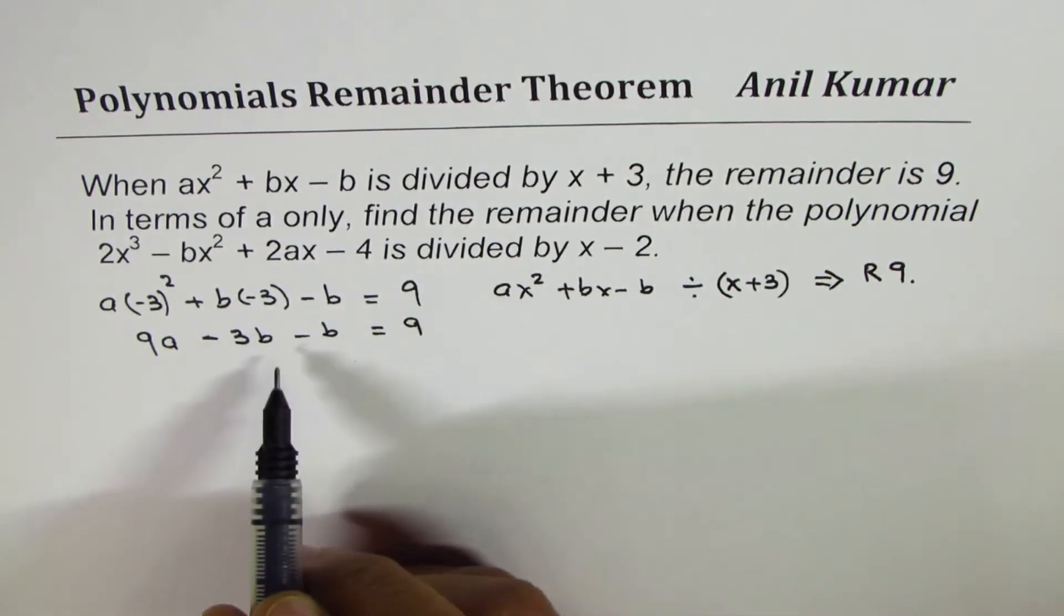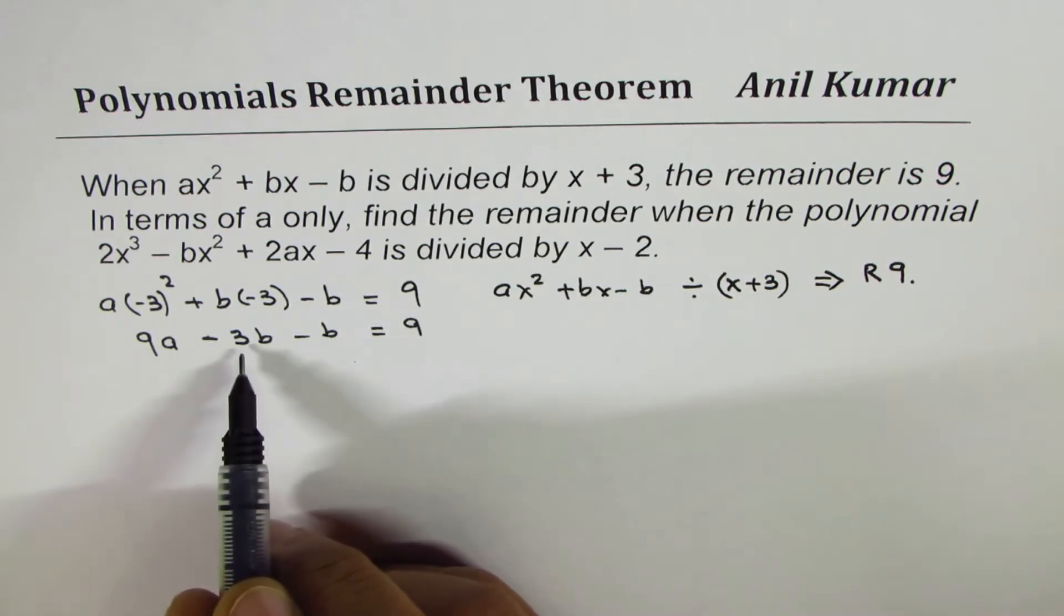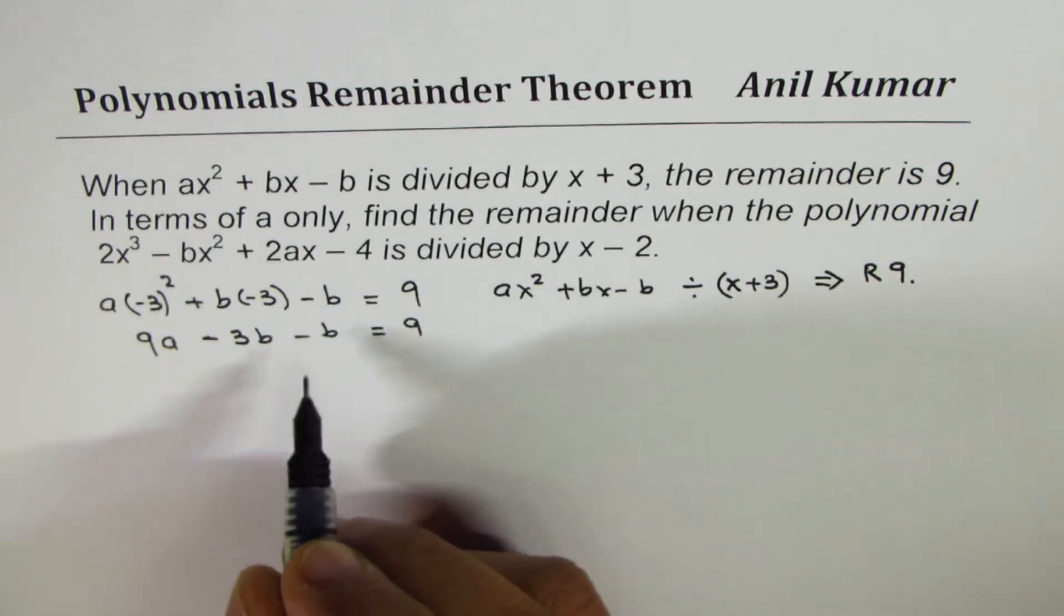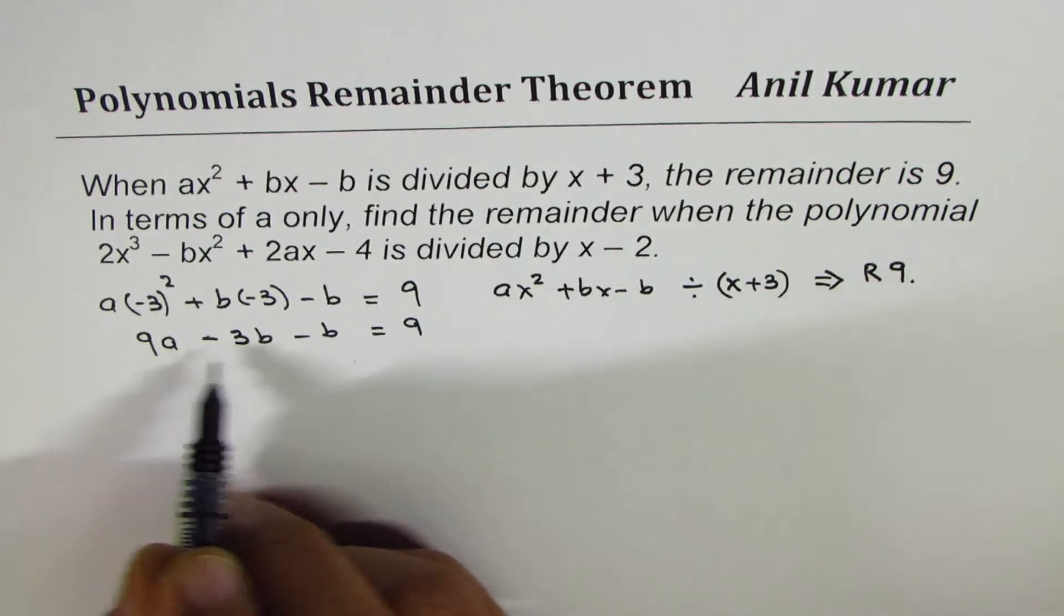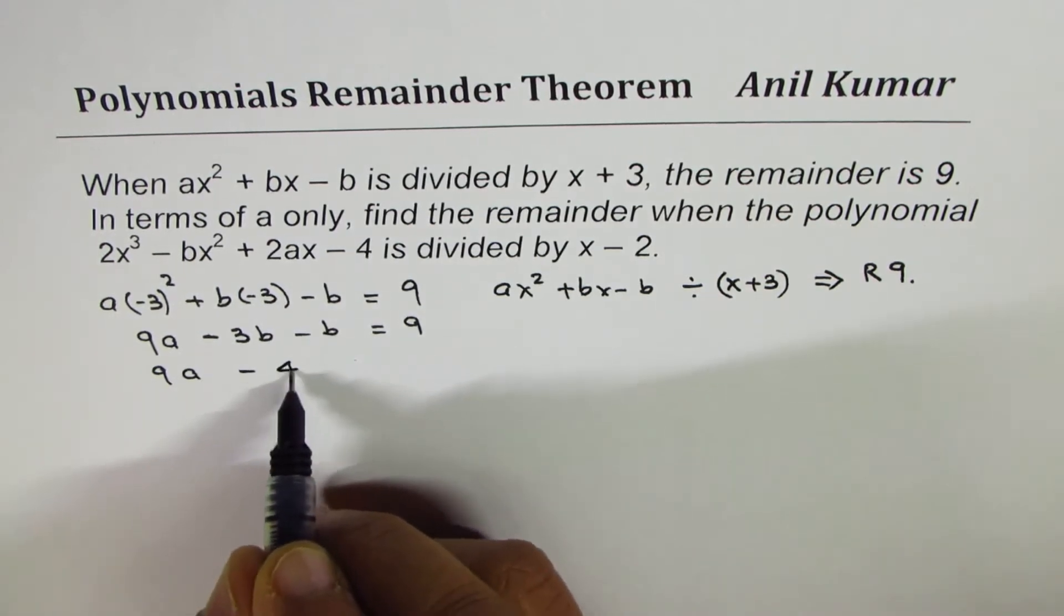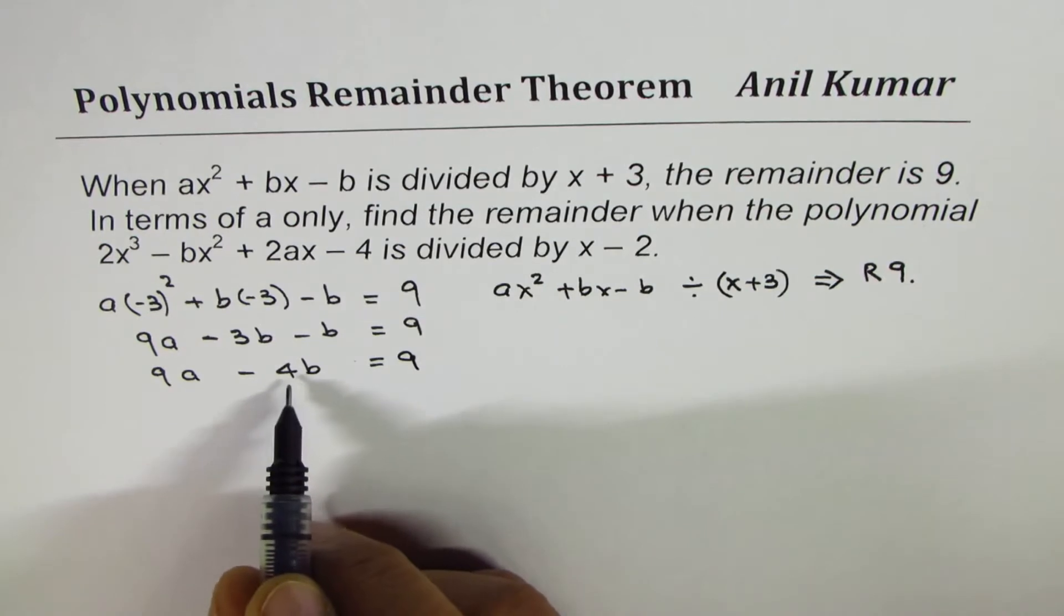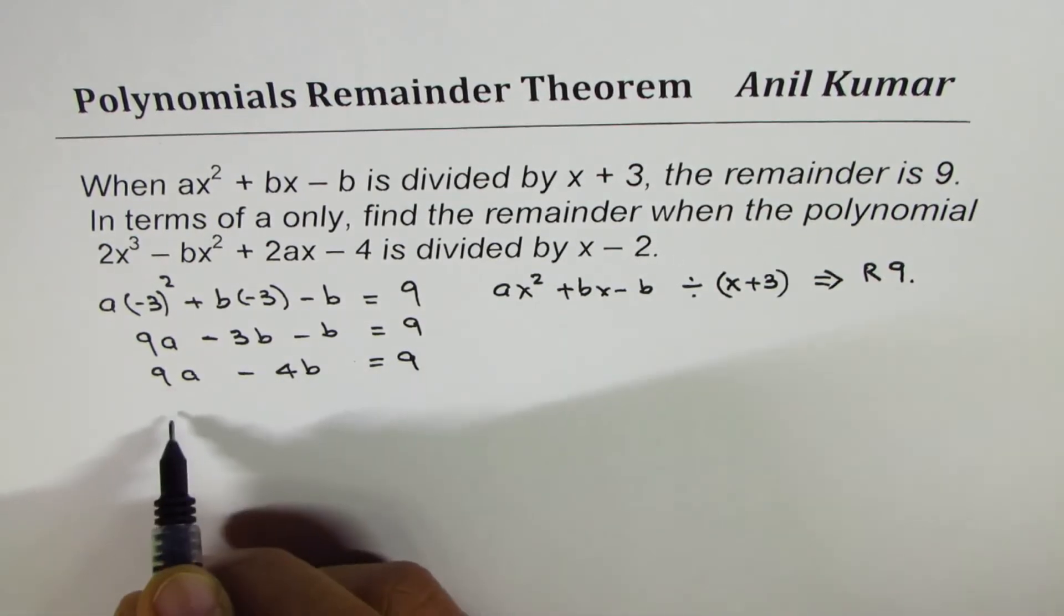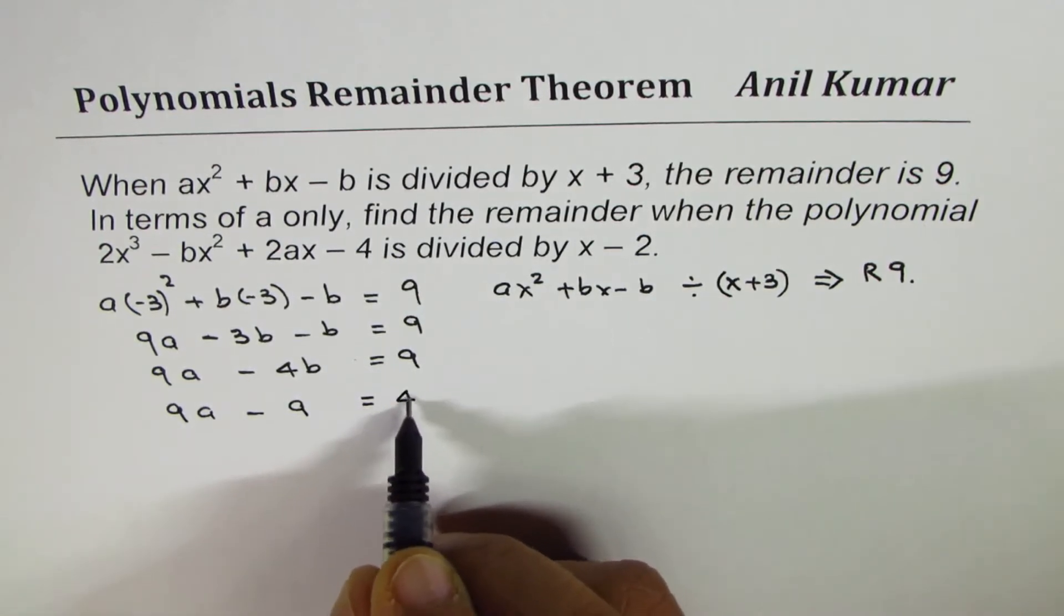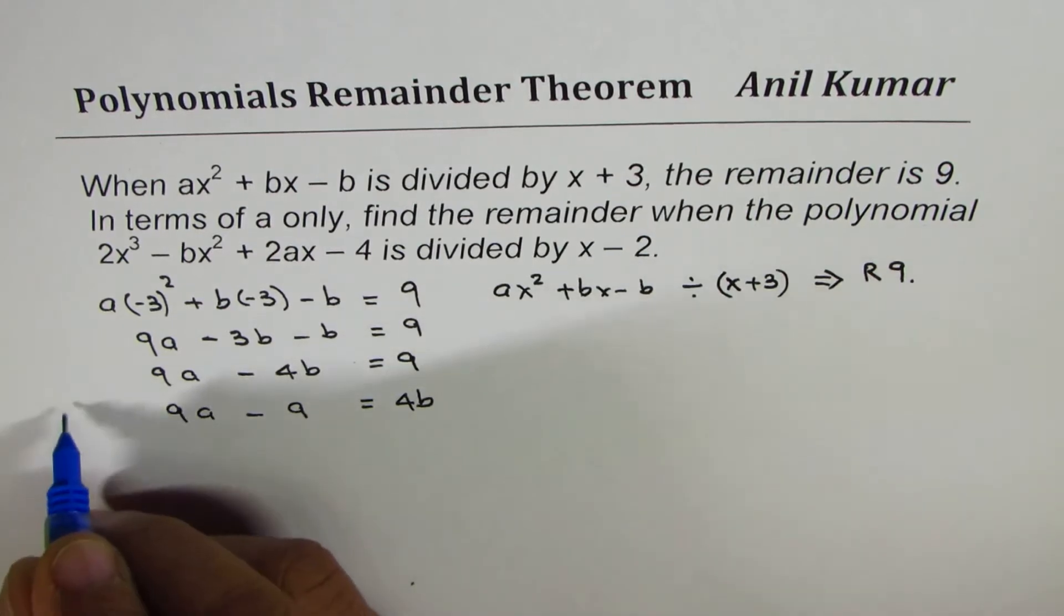So now we'll solve b in terms of a. So minus 3b minus b gives us minus 4b. Let me rewrite. So 9a minus 4b equals to 9. We can take 4b to the right side. So we get 9a minus 9 equals to 4b. Let me call this as my equation number 1.